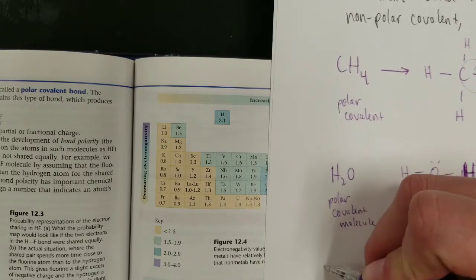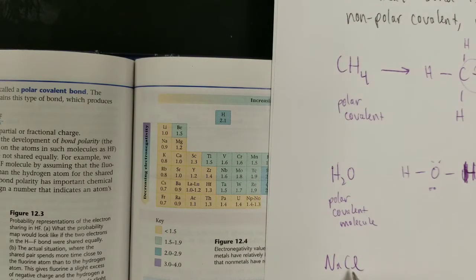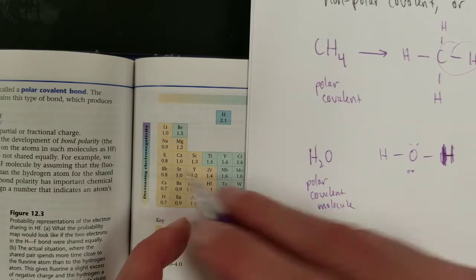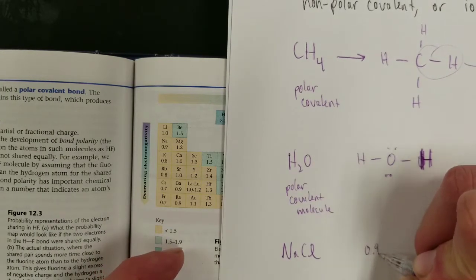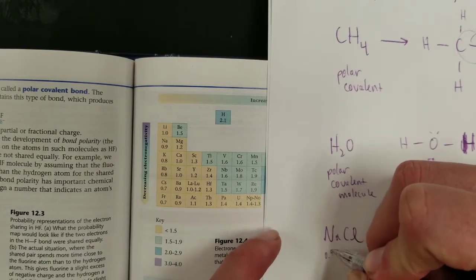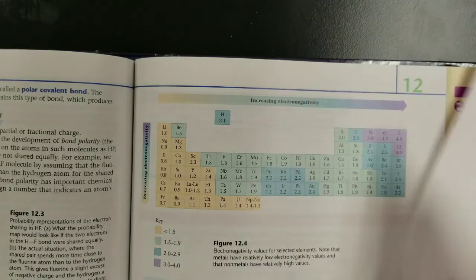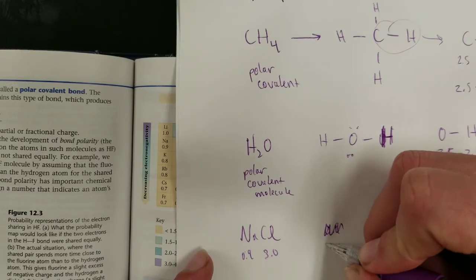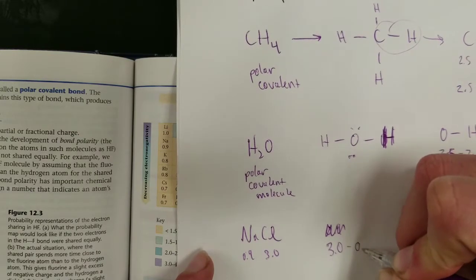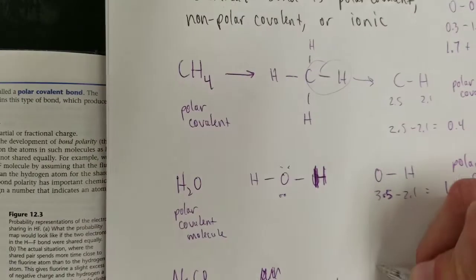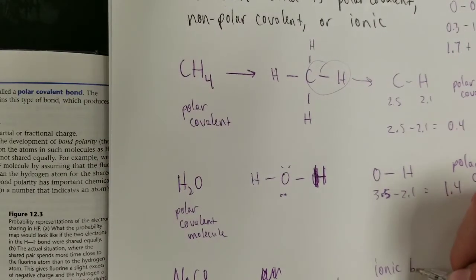Let's look at sodium chloride. We know this is ionic. It looks like it's a metal and a nonmetal. Let's check to see how it comes out. Sodium has a value of 0.9. Chlorine has a value of 3.0. So, let's take 3.0 minus 0.9 is a difference of 2.1. According to this chart, that means it's ionic. Ionic bond. All right. That works pretty well.